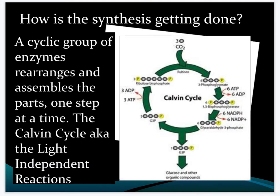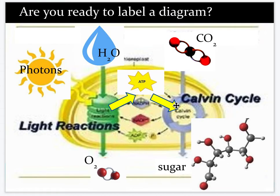How is this synthesis getting done? It happens in what's called the Calvin cycle. Something important to remember is that every time you see arrows in these diagrams, it means things are changing — things are either being broken or assembled, and enzymes are being used.